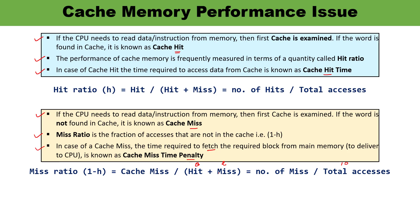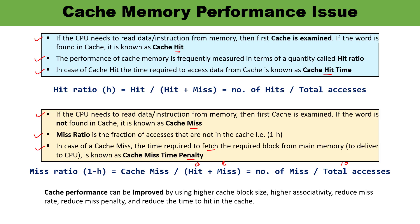Cache performance can be improved by: using a higher cache block size — the block size of cache must be larger; achieving a reduced miss rate — the number of hits must be higher and misses must be reduced, since a high miss rate means data must be accessed from the slower main memory; and by reducing miss penalty and reducing the time to hit in the cache. These are the various factors through which the performance of cache memory can be improved.